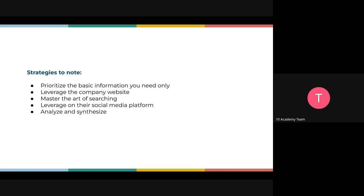Number three: master the art of searching. Know the keywords you are using so you get the results you want easily and quickly. Because we will be dropping a lot of applications — 200 per month — and you're expected to have done company research for every single one of them to ensure you're submitting a quality application. That's why we reduce the number to 10 applications per day, so you have enough time to read about the company and carefully review job descriptions.